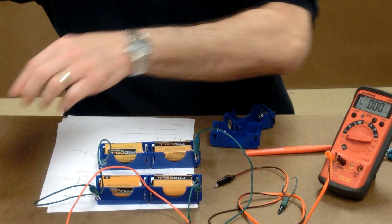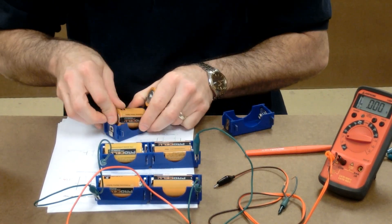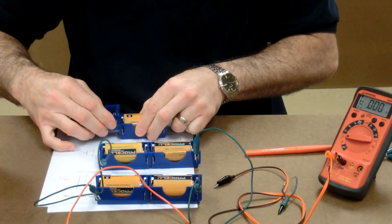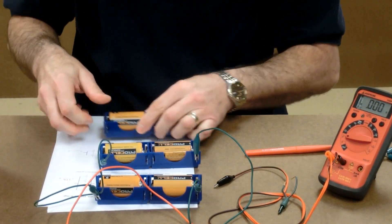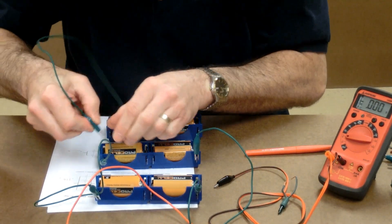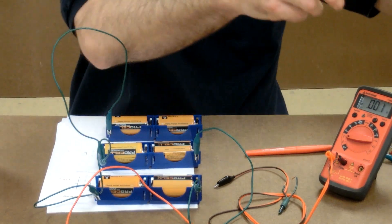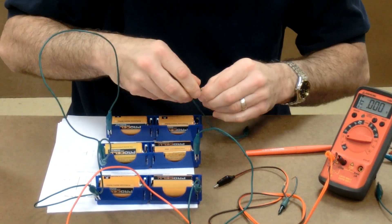We can add a third branch. I'll take two more D-cells, put them together. I need two more alligator clip wires to connect the positive to the positive and the negative to the negative.